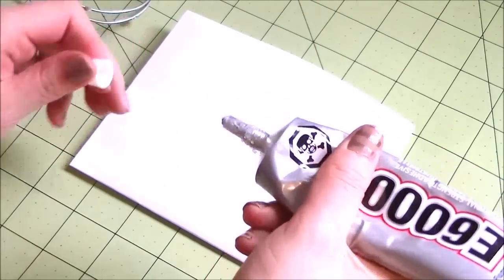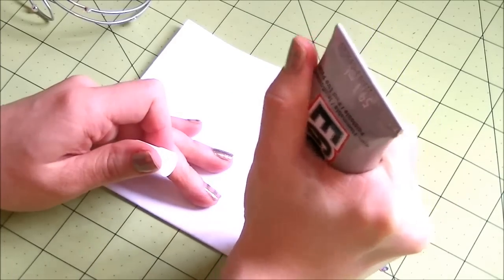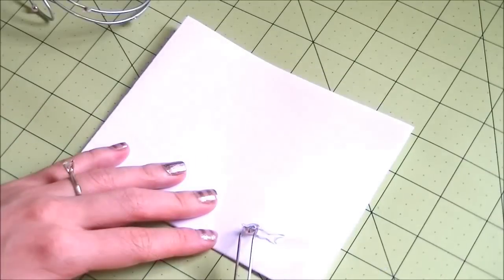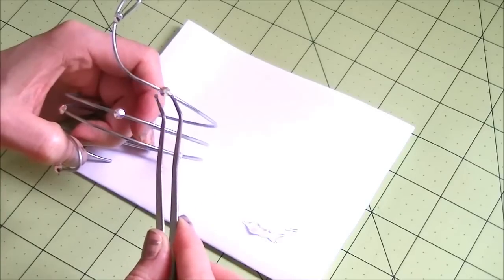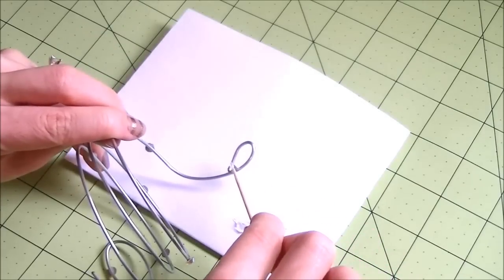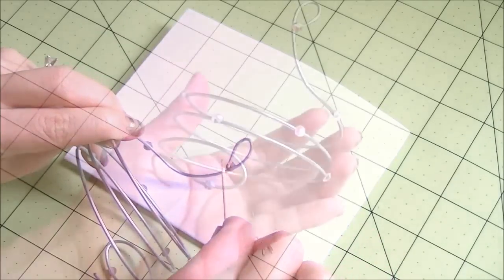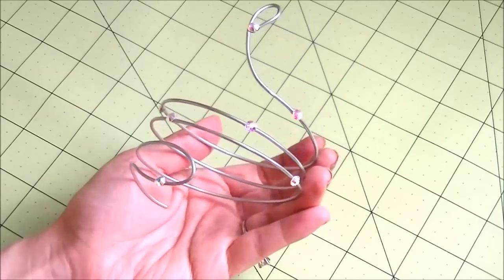For the first design I used E6000 to glue on rhinestones. To avoid putting too much glue I put E6000 on a piece of scrap paper and used tweezers to put E6000 on the back of the rhinestones then placed them on the wire. And I went back in with the toothpick to add a bit more E6000 to seal the wire to the back of the rhinestones.